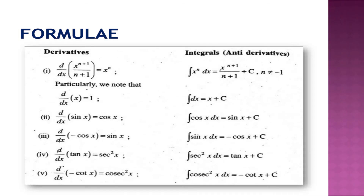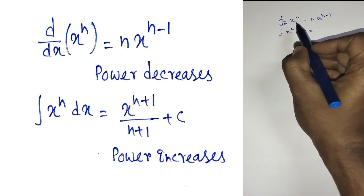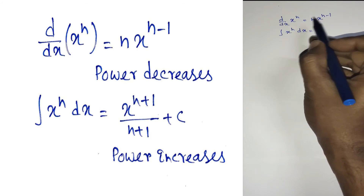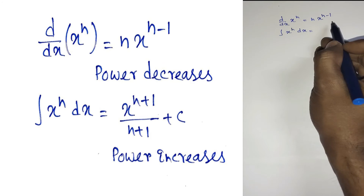Let's discuss some formulae related to integration. On the right-hand side of your screen you have the integration formulae. Remember that integration is the antiderivative of a function. For the first formula: if we differentiate x^(n+1) divided by (n+1), we get x^n. So if we integrate x^n, we get x^(n+1) divided by (n+1) plus C, where C is the integrating constant. For differentiation, we multiply n into x^(n-1).